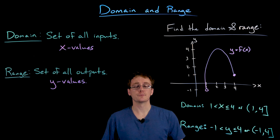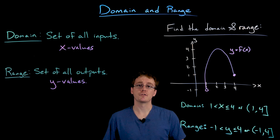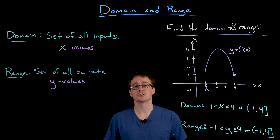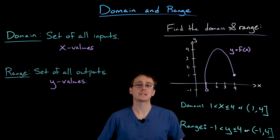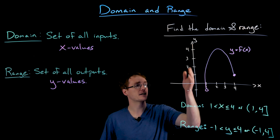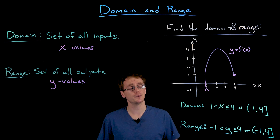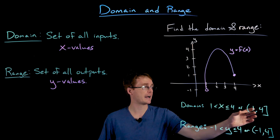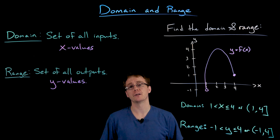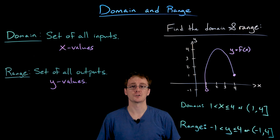Describing the domain and range from the graph of a function is a pretty straightforward process. The only tricky things to watch out for are vertical asymptotes or discontinuities, which might mean we have multiple intervals for our domain and or range.